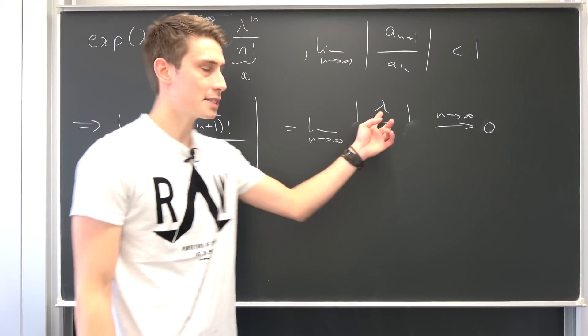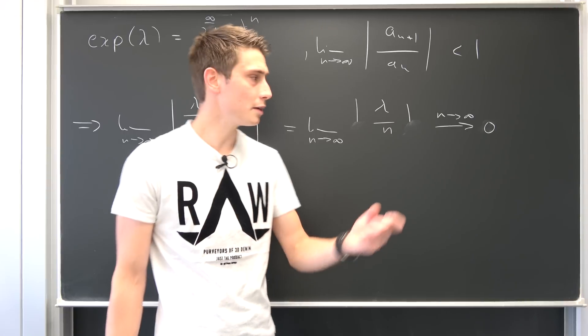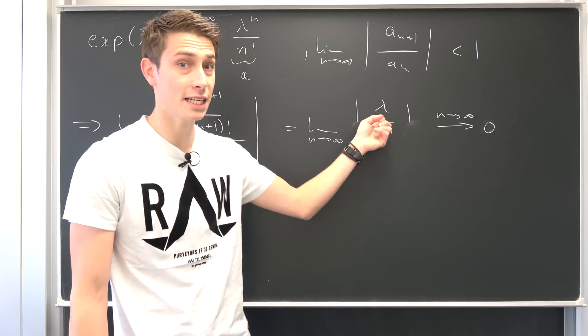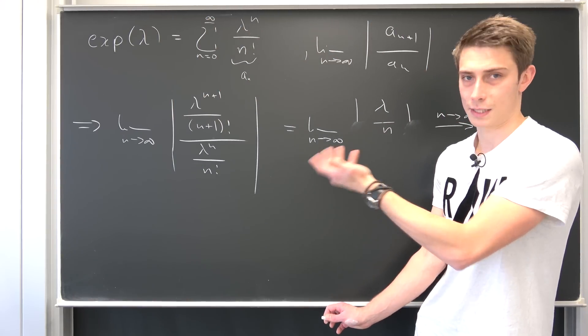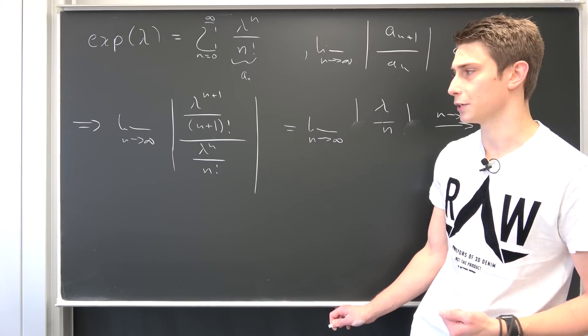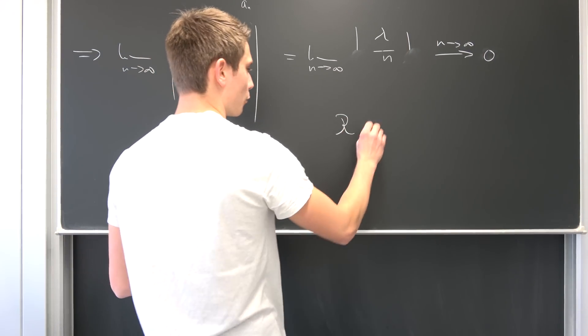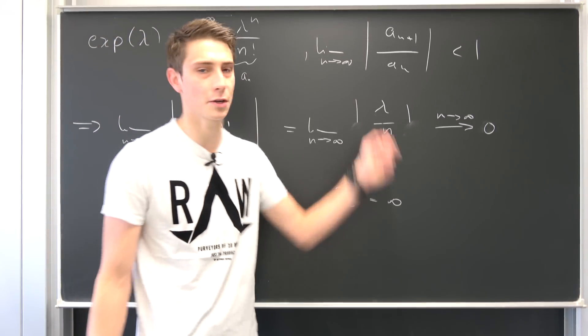And well, that means our radius of convergence, so all the absolute values of lambda, is just infinity. So it really doesn't matter what value you plug in, it's always going to converge for every value. And that's it. So the radius of convergence is infinity in this case. It doesn't matter what you plug in.